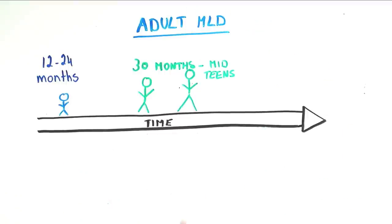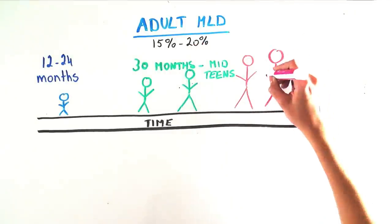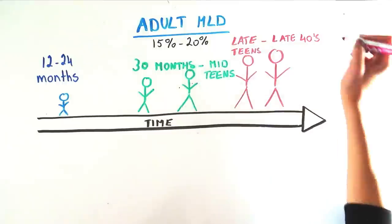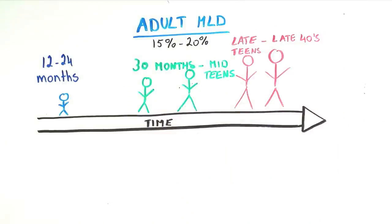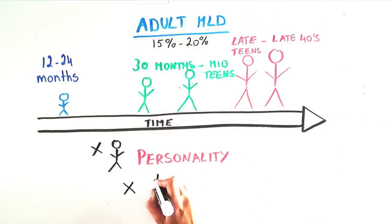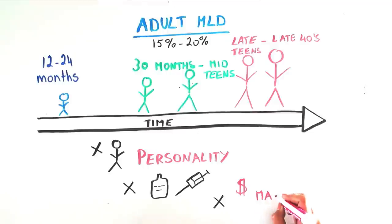Lastly, adult MLD represents 15-20% of cases and occurs at any adult age, from late teens through the late 40s and beyond. Signs of adult MLD include personality changes, alcohol or drug abuse, poor money management,